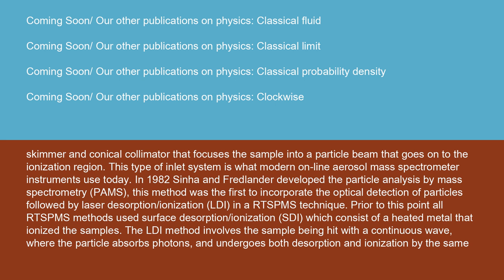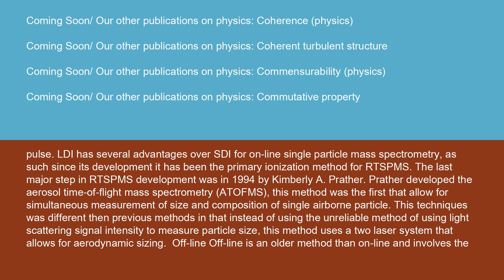In 1982, Sinha and Fred Lander developed the particle analysis by mass spectrometry (PMS). This method was the first to incorporate the optical detection of particles followed by laser desorption/ionization (LDI) in an RTSB-MS technique. Prior to this point, all RTSB-MS methods used surface desorption/ionization (SDI), which consists of a heated metal that ionized the samples. The LDI method involves the sample being hit with a continuous wave where the particle absorbs photons and undergoes both desorption and ionization by the same pulse. LDI has several advantages over SDI for online single particle mass spectrometry, and since its development it has been the primary ionization method for RTSB-MS.